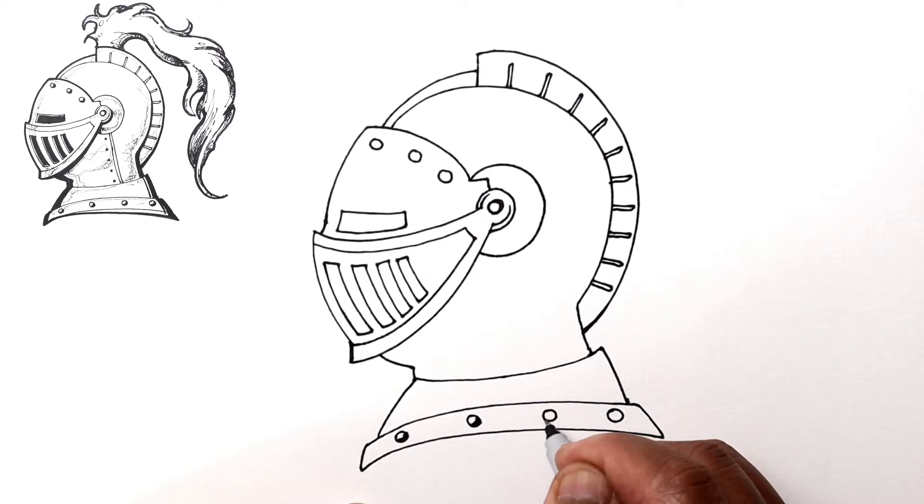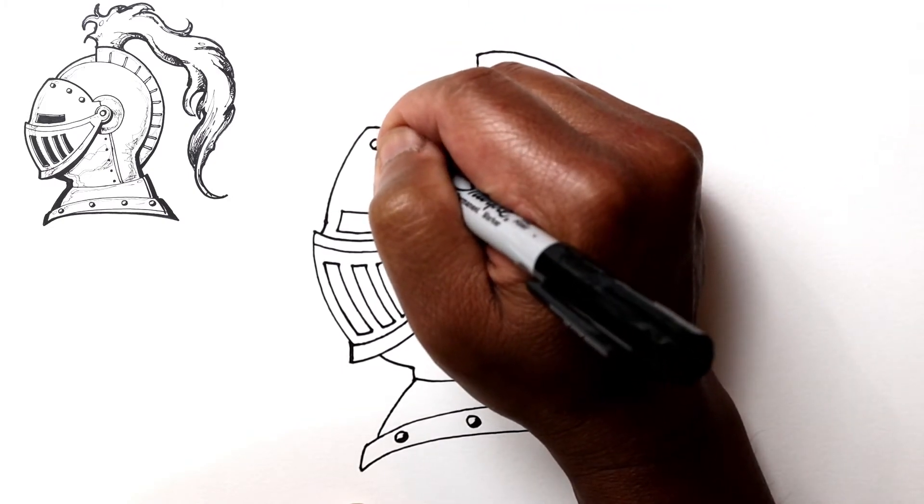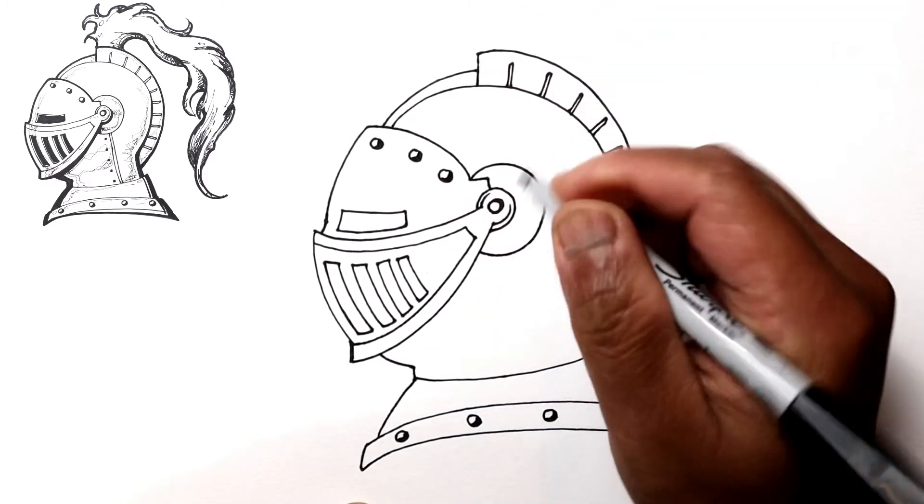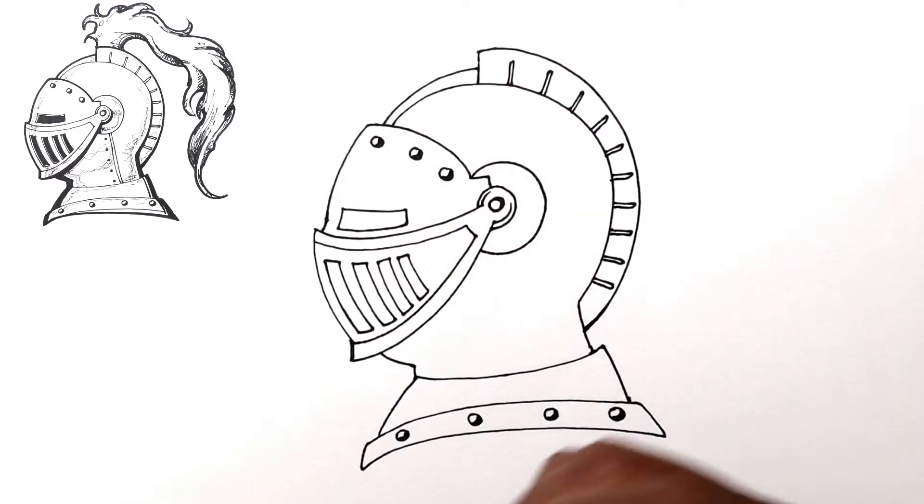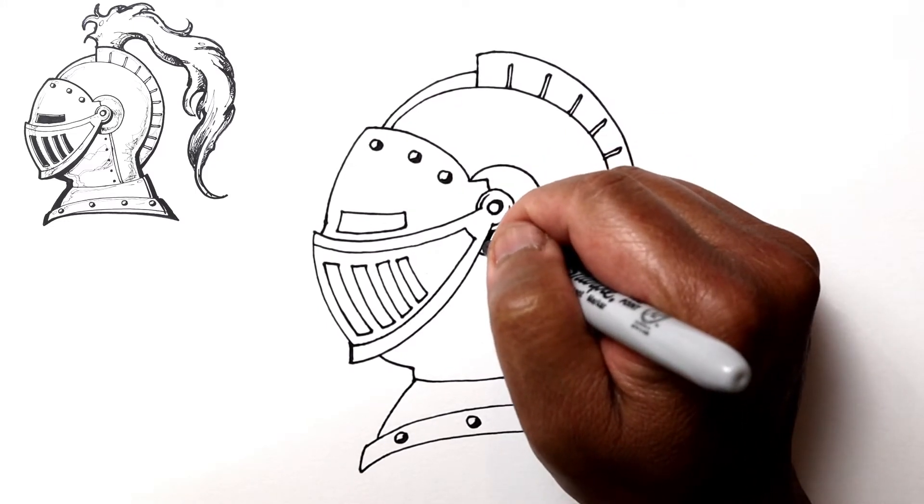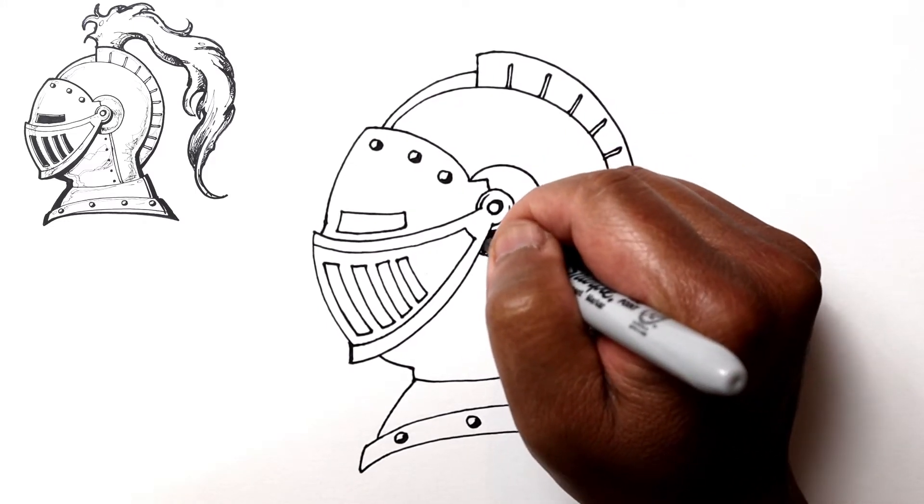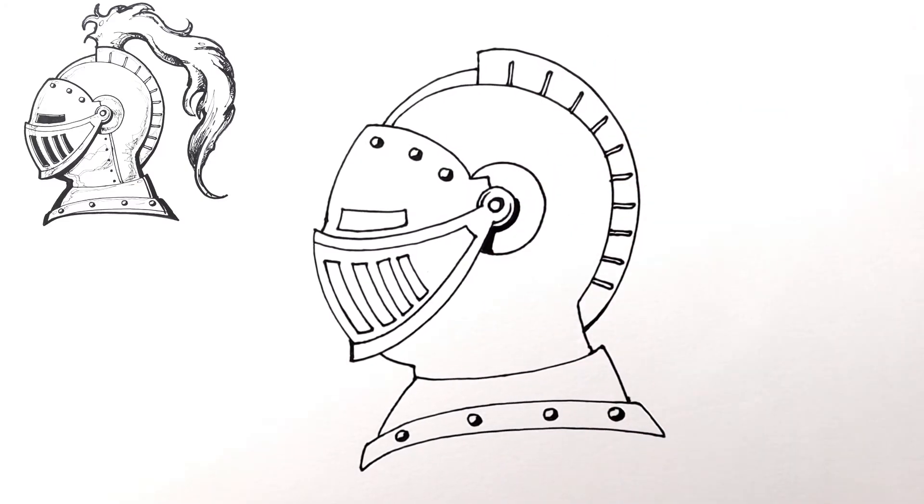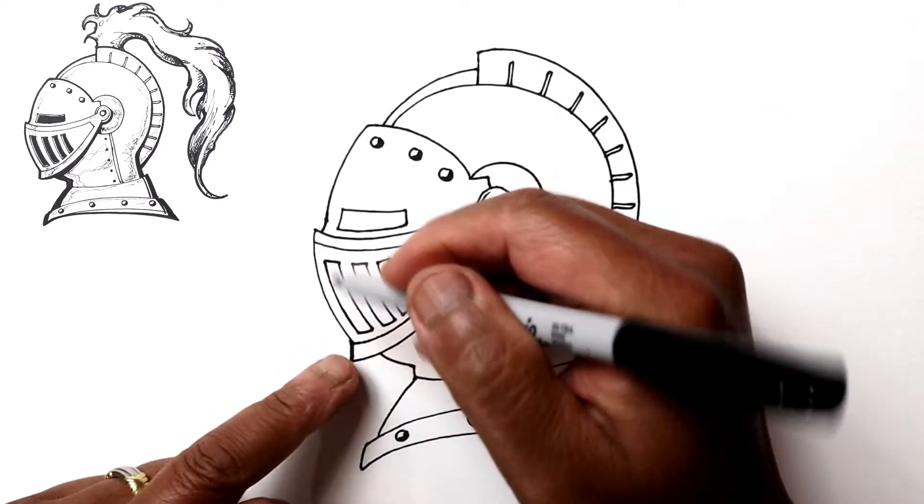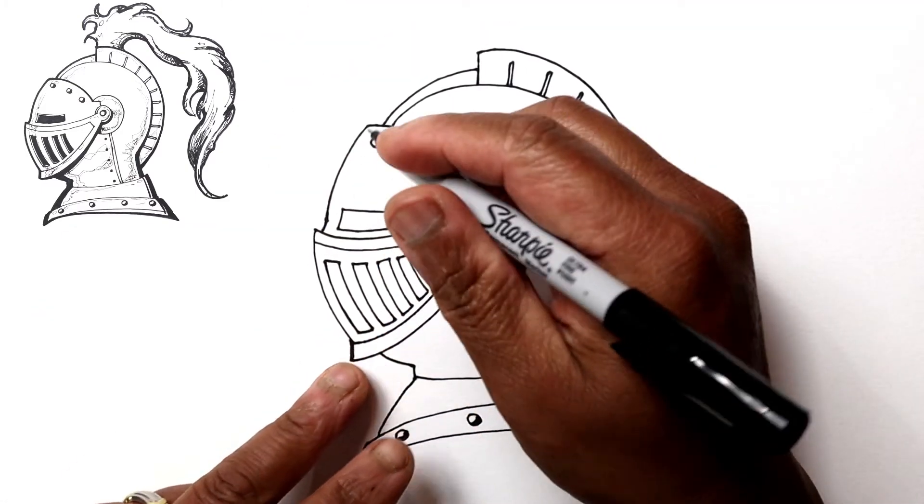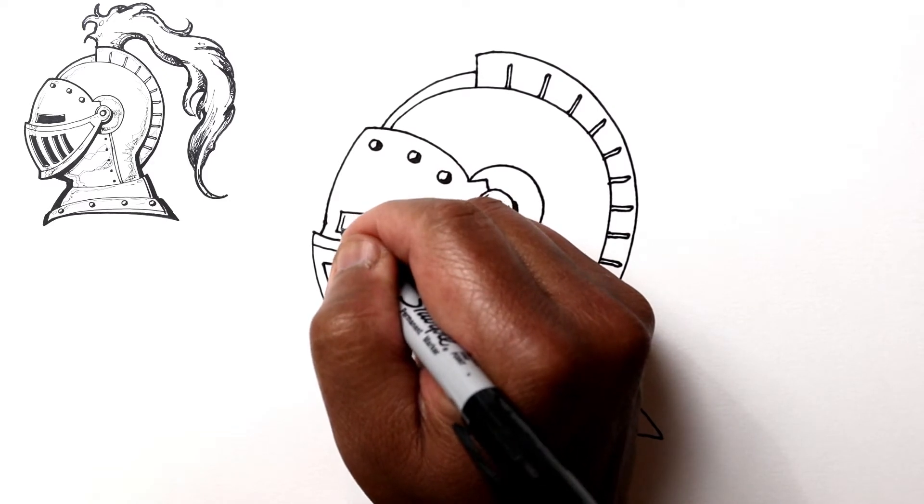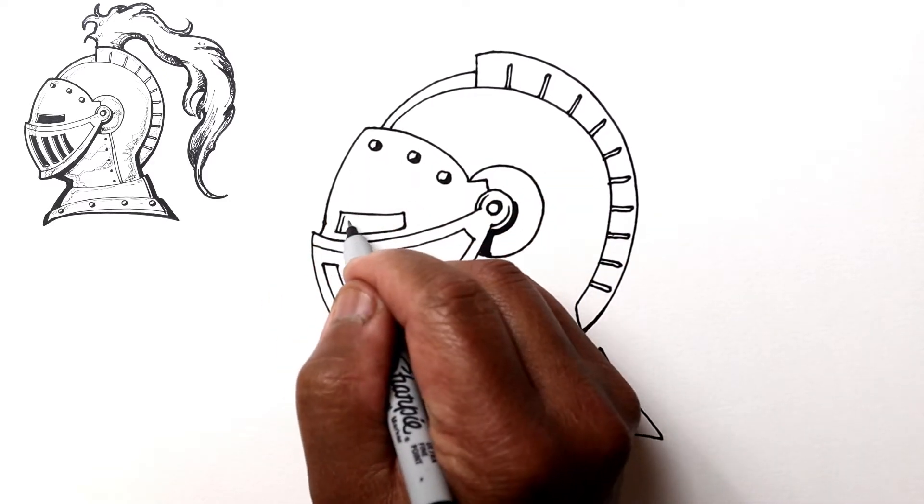For these rivets, what we'll do is we'll just darken the lower right parts to make it look like they're three-dimensional like that. I'm just going to go ahead and switch to my thicker Sharpie to add some shadows. Let me go back to our holes here.